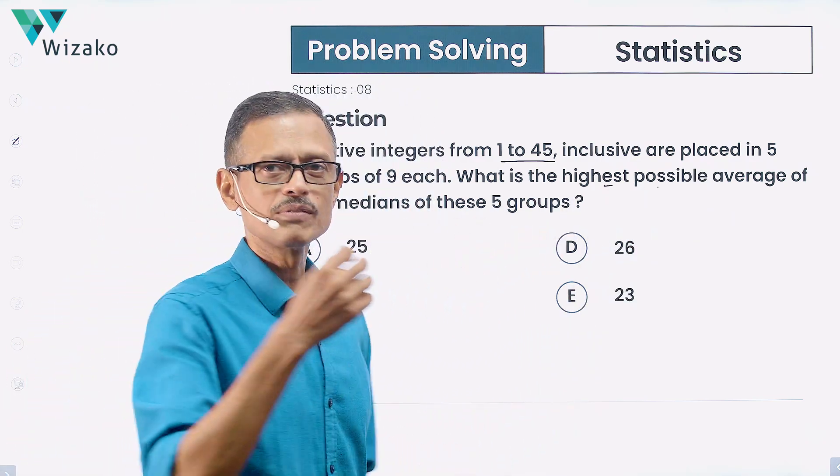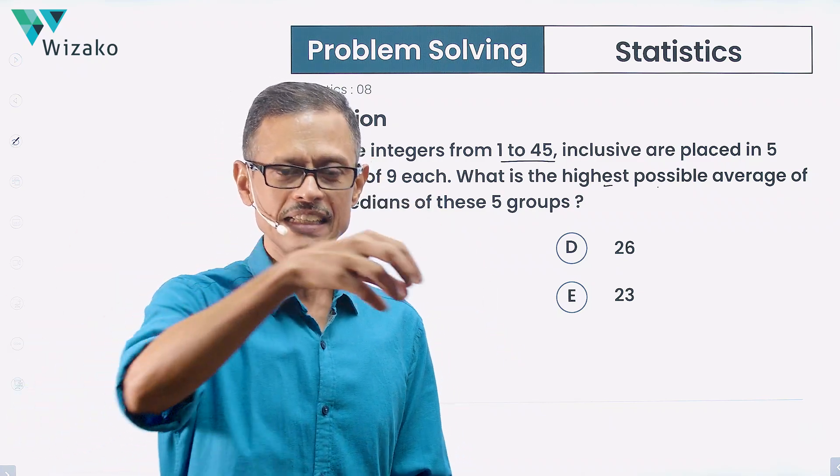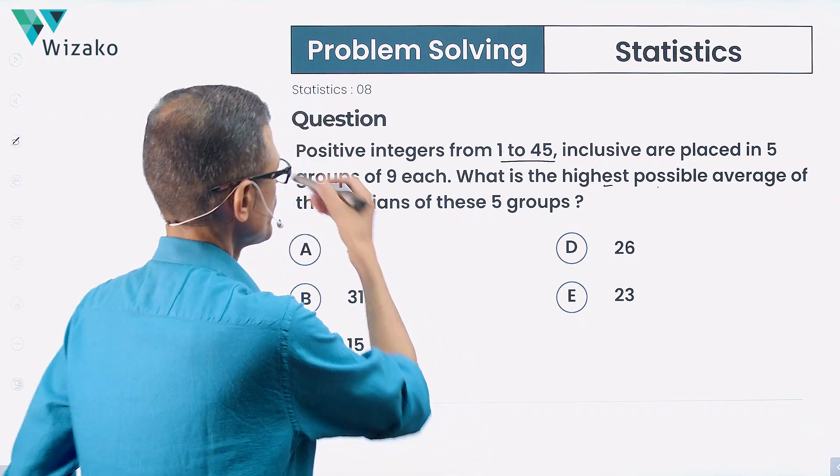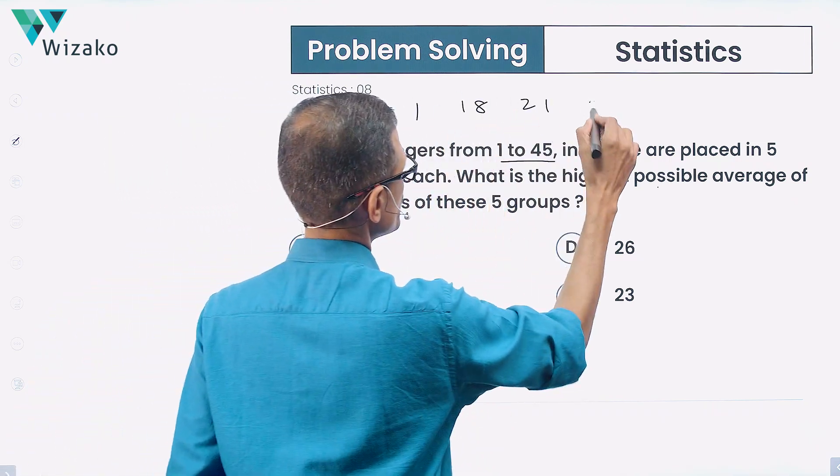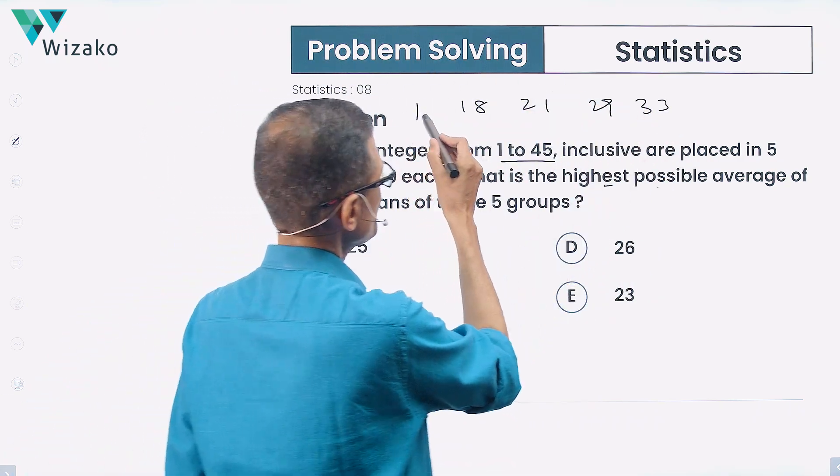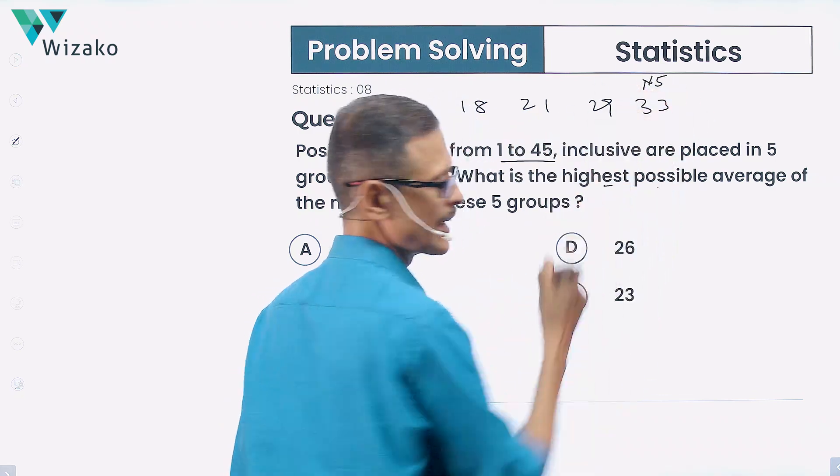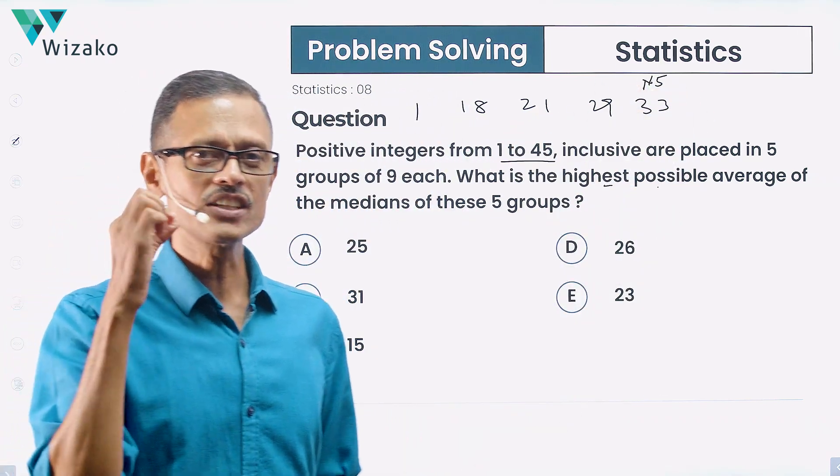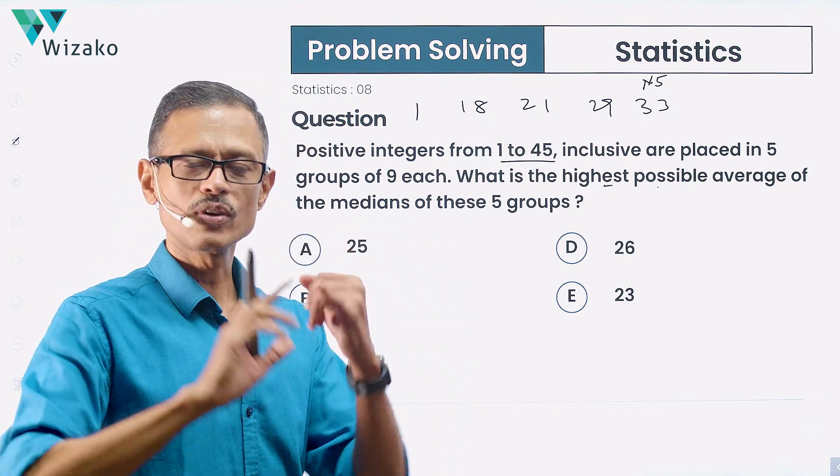Let's start from here. We're trying to find out medians for these 5 groups. In each group, there are 9 numbers. You will write those numbers in ascending order. The 5th number, because there are 9 numbers, I'll call it N5. N5 in ascending order in each of these groups is going to be the median. So we're finding out the medians for these 5 groups.